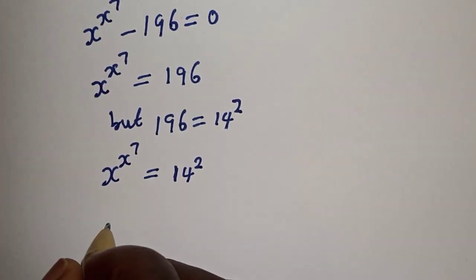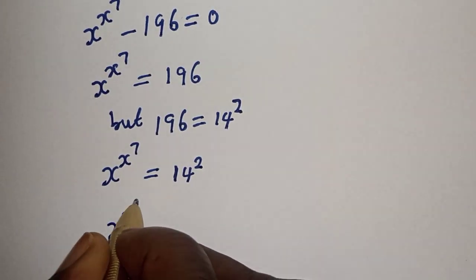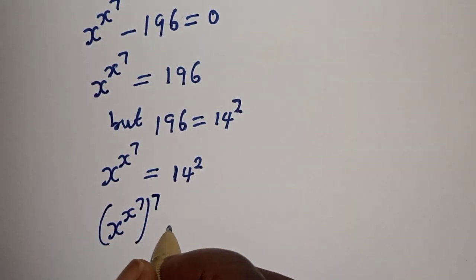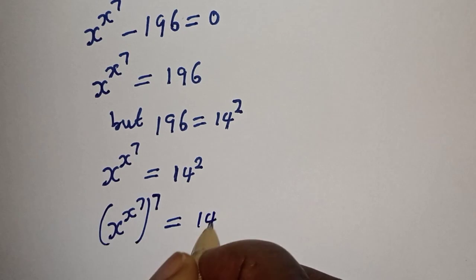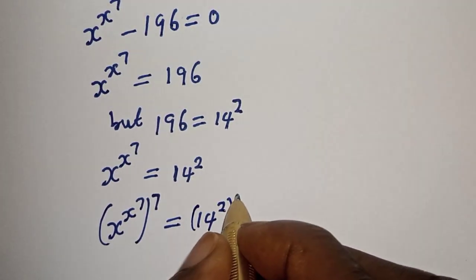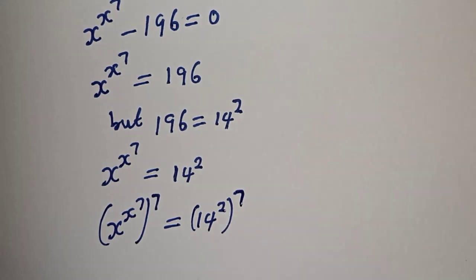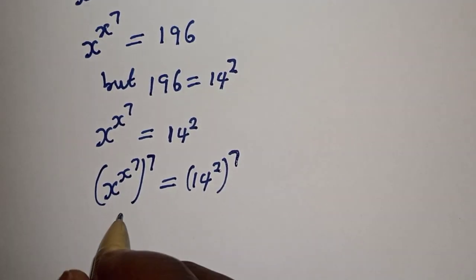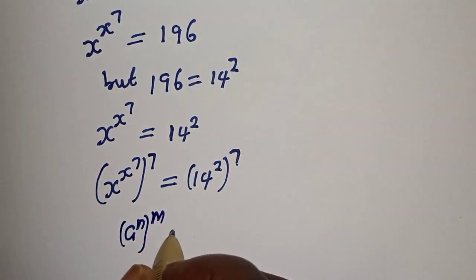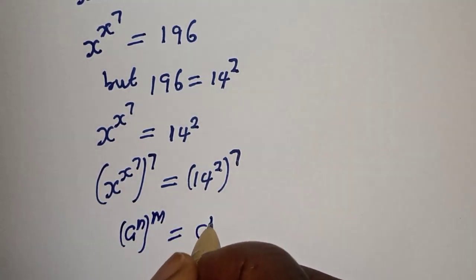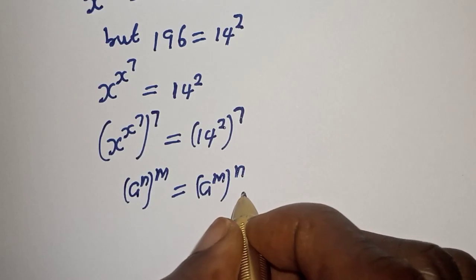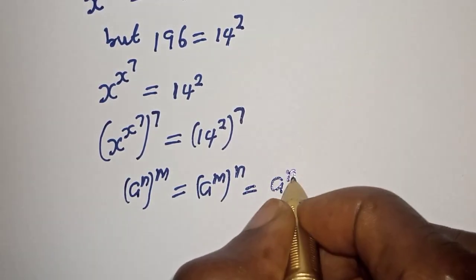That is, S raised to power S raised to power 7 multiplied by 7 is equal to 14 squared to the power of 7. Then, using the rule: A raised to power N raised to power M is equal to A raised to power M raised to power N, which equals A raised to power M.